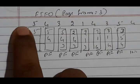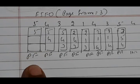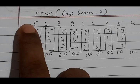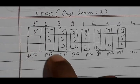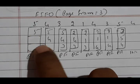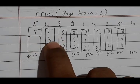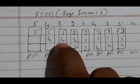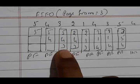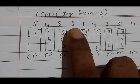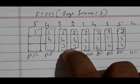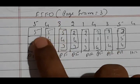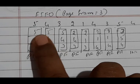In FIFO with three page frames, the RAM is initially empty. Page 5 is not present, so page fault occurs — place 5 in the first frame. Next, page 4 is not present, page fault occurs — place 4 in the second frame. Next, page 3 is not present — place 3 in the third frame. Now the RAM is full. CPU demands page 2, so we must replace a page. According to FIFO, page 5 came in first, so we replace 5 with 2.